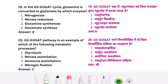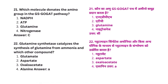In the GS-GOGAT cycle, glutamine is converted to glutamate by which enzyme? Glutamate synthetase. The GS-GOGAT pathway is an example of which metabolic process? Ammonium assimilation. Which molecule donates the amino group in the GS-GOGAT pathway? Glutamine.